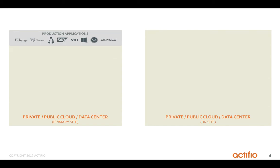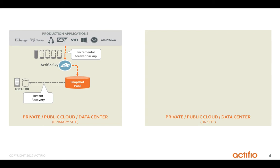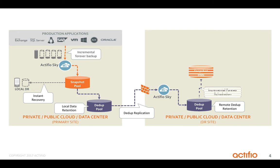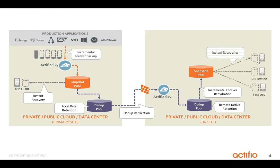Now let's see how Actifio satisfies data retention and low RTO needs. Actifio does incremental forever backups as explained previously. It stores data in native application format in the Actifio snapshot pool, from which you can do instant local recoveries. It can dedupe and store data in the Actifio dedupe pool on any storage, then replicates the dedupe data with very low bandwidth to Actifio Sky at a remote site. It can store data in a remote dedupe pool on any storage, and based on SLAs, it can optionally do incremental forever rehydration of data to the snapshot pool. Since the data is already in native application format in the snapshot pool, you can do instant recoveries for disaster recovery or provision multiple virtual copies for test and dev.